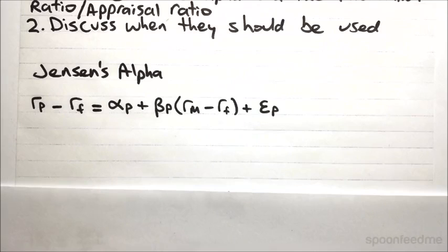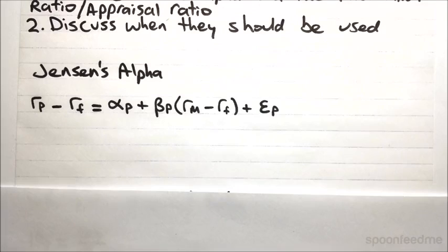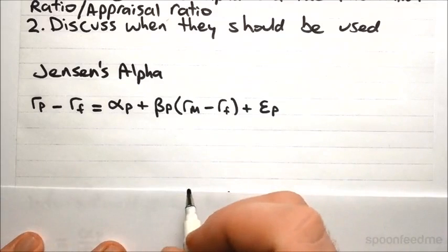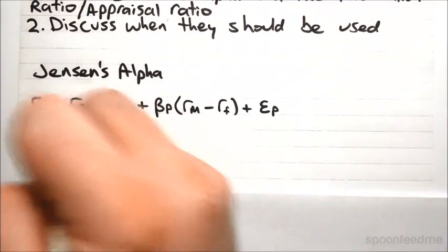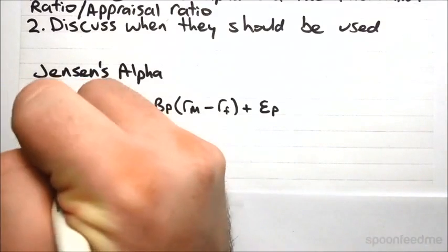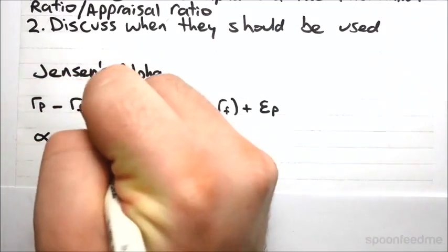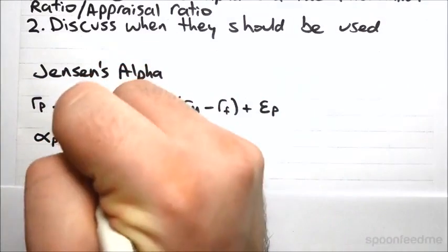So in the same way as with an asset, if you've got history of the portfolio's returns, you can run a regression. If you don't have history of that specific portfolio, but you do have history of the returns of the individual assets in the portfolio, then you can just do it all individually. And in the same way as with the beta of the portfolio, the alpha of the portfolio is just the weighted sum of all of the alphas.